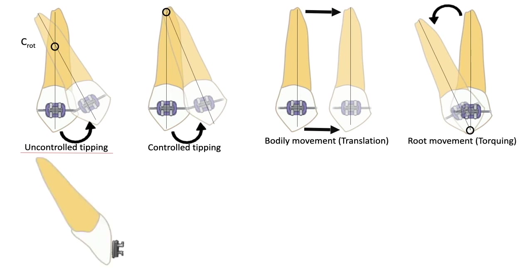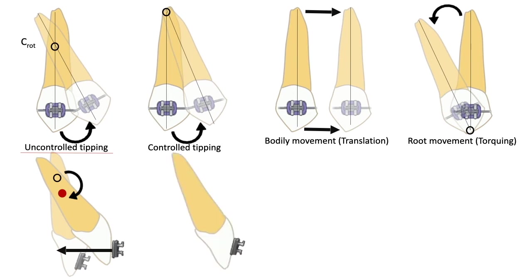Uncontrolled tipping is the most common tooth movement in everyday orthodontics, but it is not always the preferred one. To modify this pattern, a new force is applied closer to the center of resistance. A rigid attachment often called a power arm can be attached to the bracket on the crown of the tooth; then the force can be applied to this power arm, moving the line of force to a different location, thereby altering its distance from the center of resistance and changing the moment of the force. In uncontrolled tipping there is no power arm.